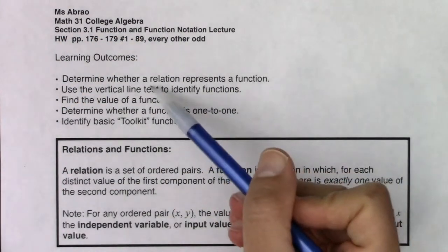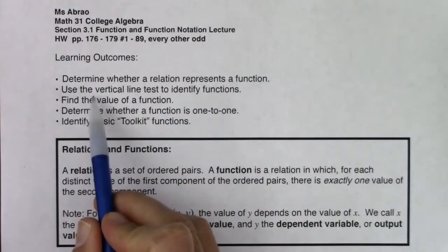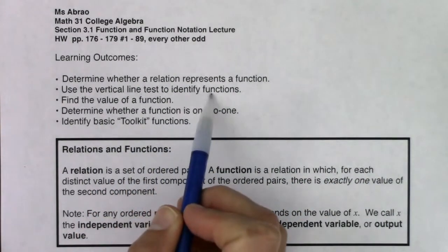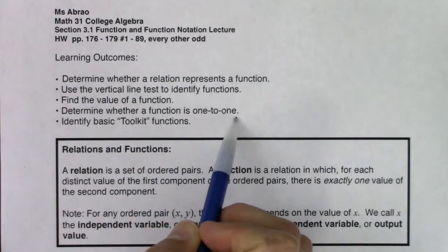In this section, we're going to determine whether a relation represents a function. We're going to use the vertical line test to identify functions, find function values, and determine whether a function is one-to-one.